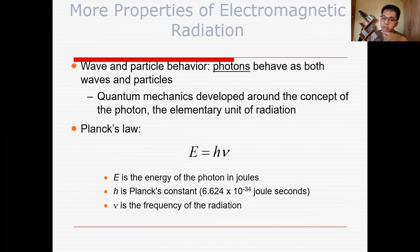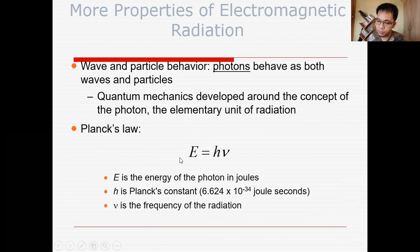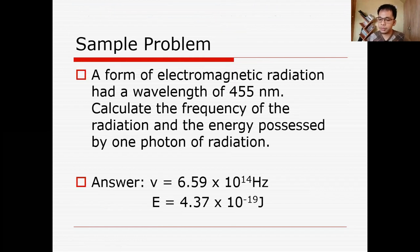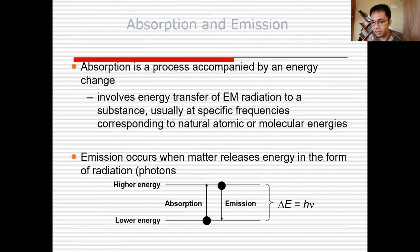Electromagnetic radiation contains photons that behave as both waves and particles. You can calculate the energy of electromagnetic radiation using the formula E = hν, where h is Planck's constant with a value of 6.626 × 10⁻³⁴ joule·second. We will cover the sample problems in part 2 of our lecture.